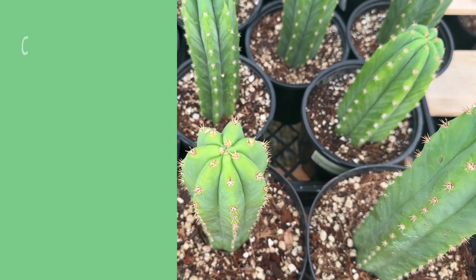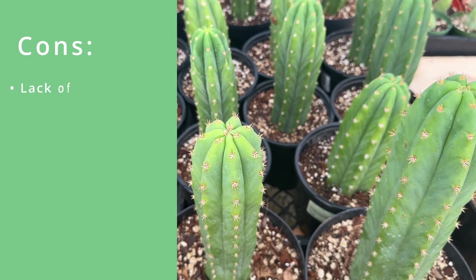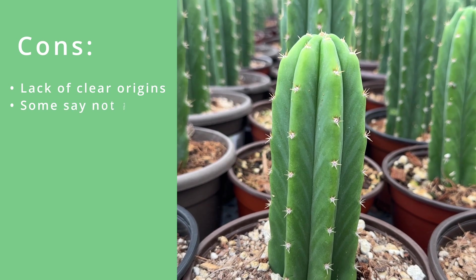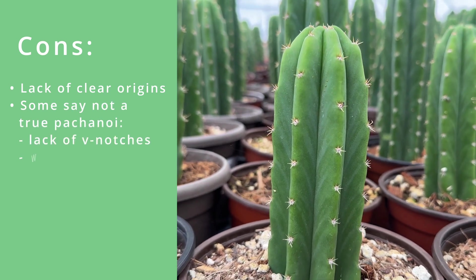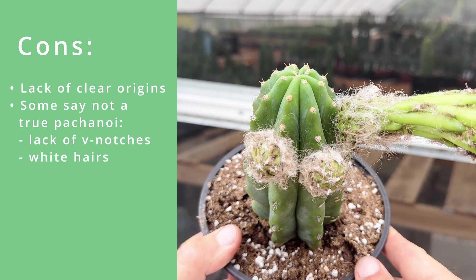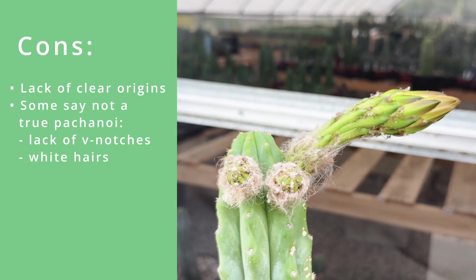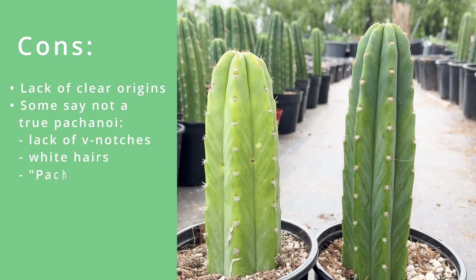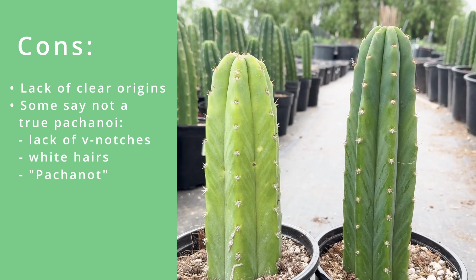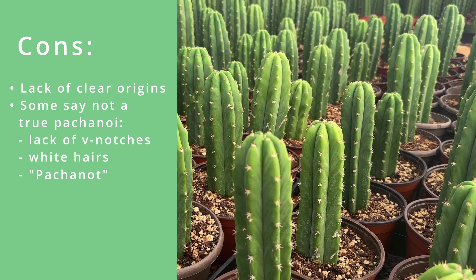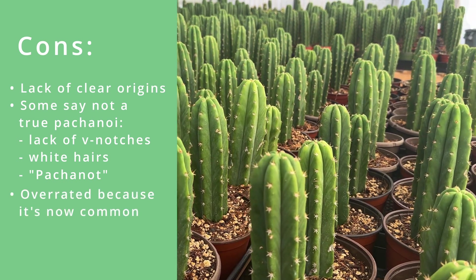People dislike PC San Pedro because there remains a lack of clear origins for this plant. Some say that it's not a true Pachanoi, because it doesn't always have the pronounced V-notching, and because it displays white hairs instead of brown, contradicting flower morphology from many textbooks. It's even been called Pachanot, because of a speculation from a botanist named Keeper Trout. Lastly, some say it's overrated because it has become so popular.